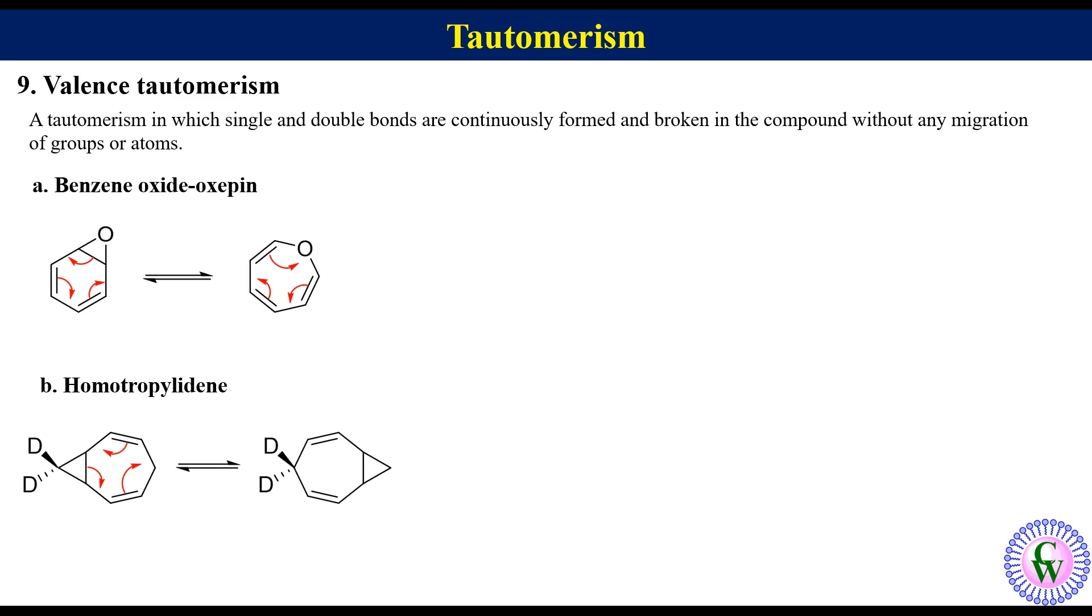The third and more interesting example of such type is bullvalene. This is the structure of bullvalene. For better understanding, label all the carbon atoms as 1, 2, 3, 4, 5, 6, 7, 8, 9, and 10. Here we can see that carbon 4, 5, and 10 are the part of cyclopropane ring.